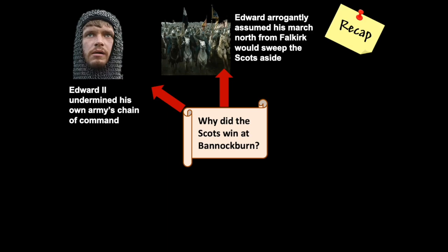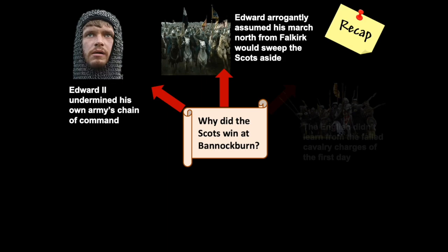On top of the weak chain of command, Edward arrogantly assumed that his march north from Falkirk would simply sweep the Scots aside. In contrast with his failed campaign of 1310 to 1311, when he'd come into Lothian with an army of around five to six thousand men, Edward was coming up towards Stirling with perhaps as many as twenty thousand men. Riding high on this massive force, Edward did not for a minute think that Bruce would stand in front of him with his army of six thousand men. This arrogance would be symptomatic of how the English regarded the Scots during the two days of the battle, and it would trip them up again and again.